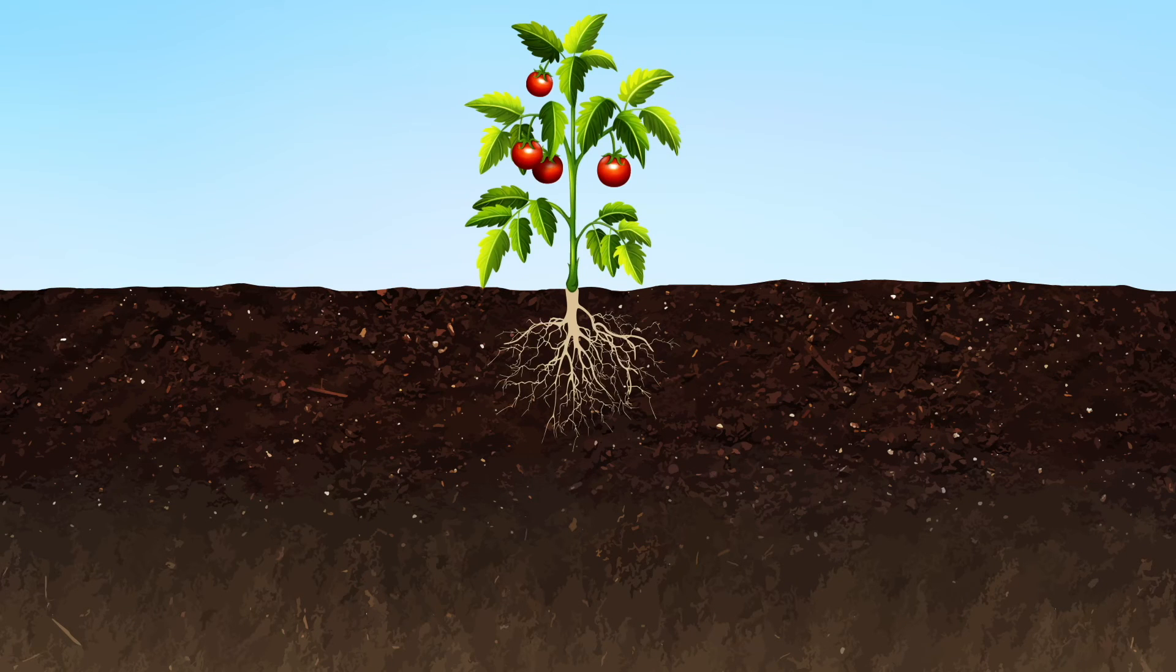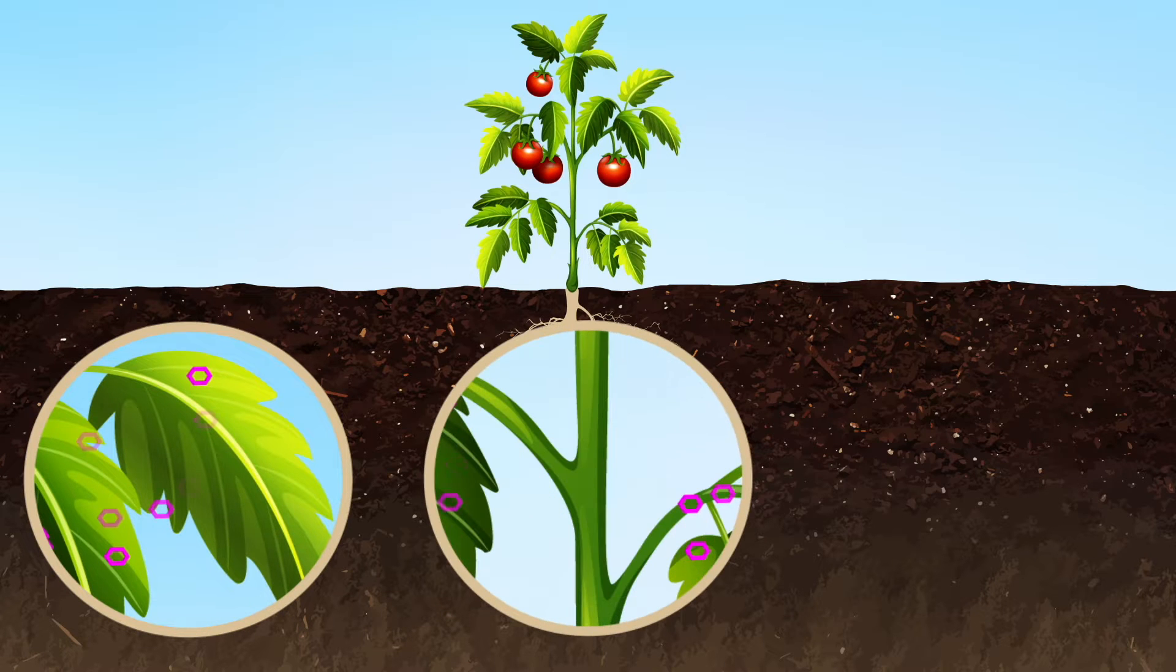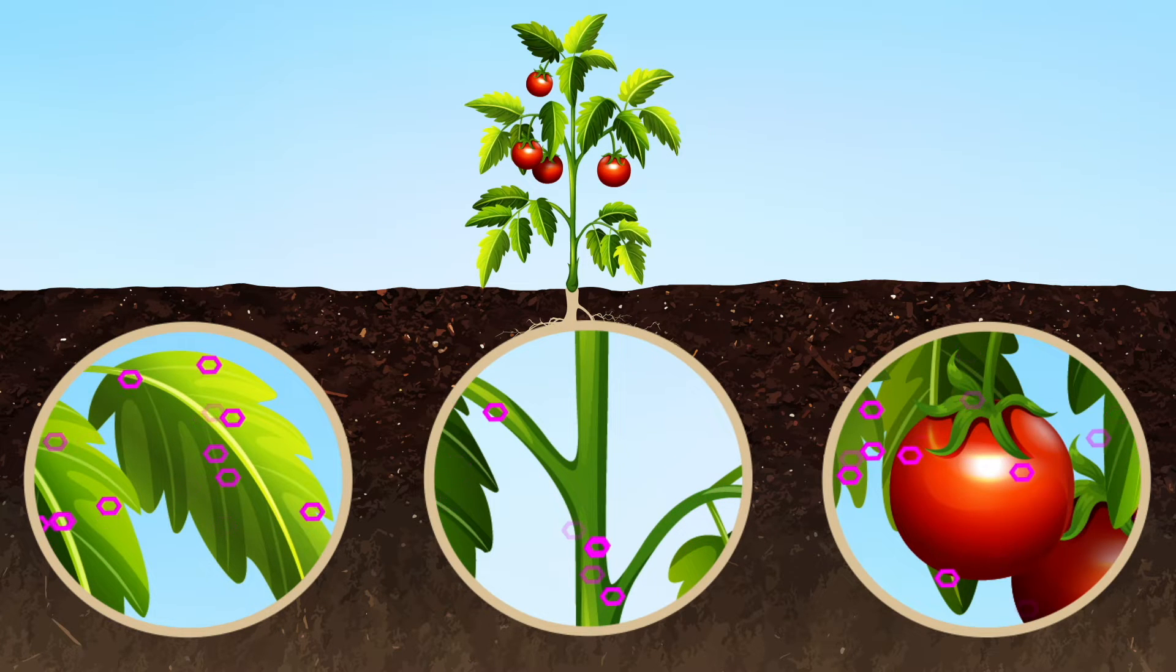But what about the above-ground part of the plant? Well, it just so happens that plants release sugars and carbs from their leaves too, and from their stems and fruit. In fact, from all parts of the living plant.